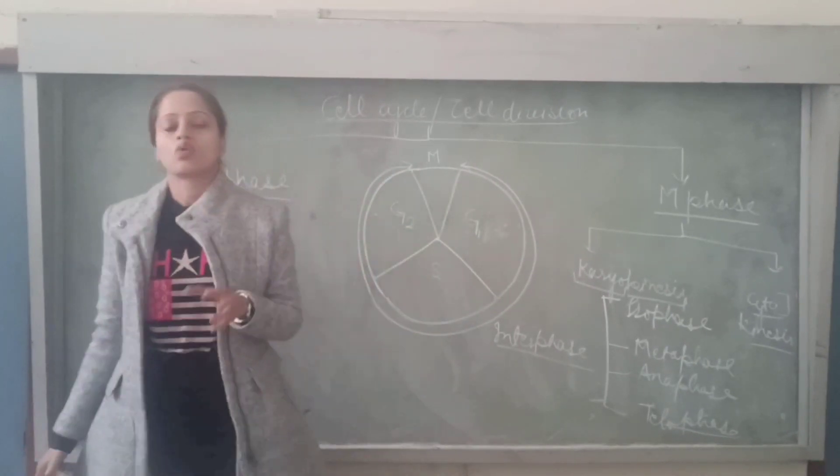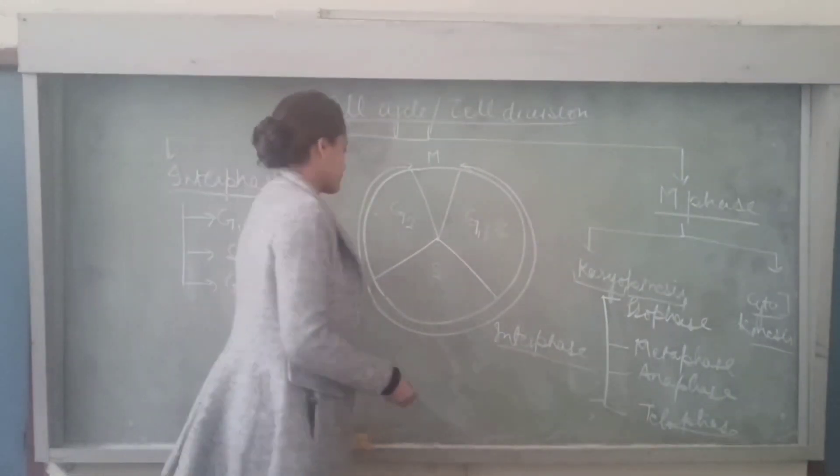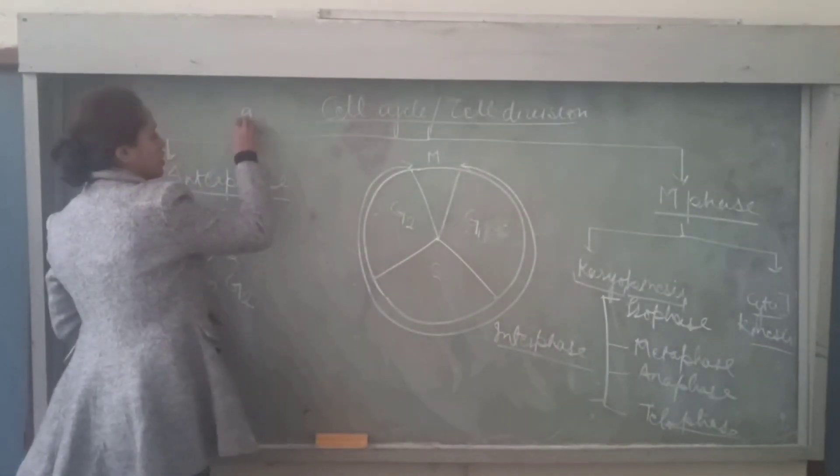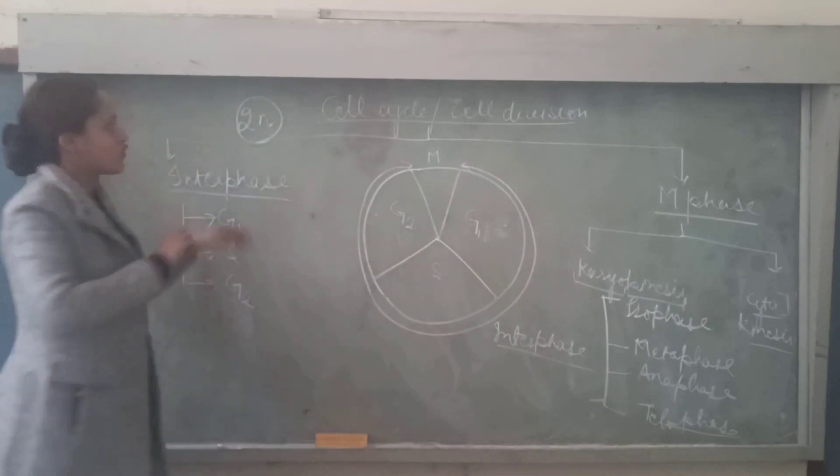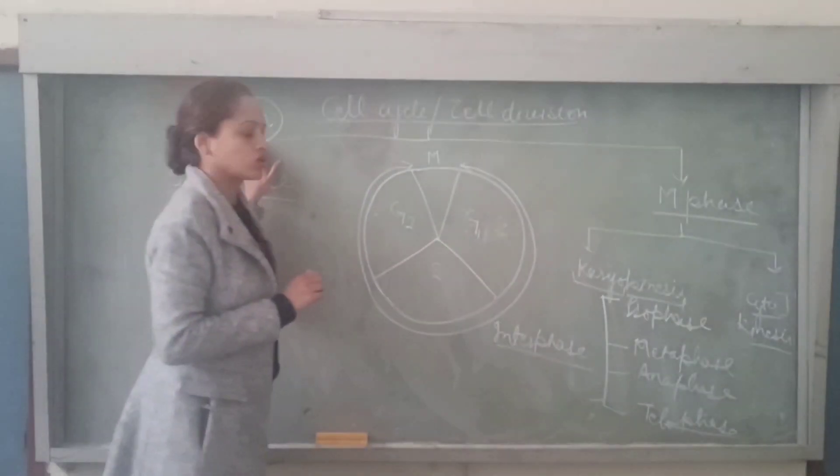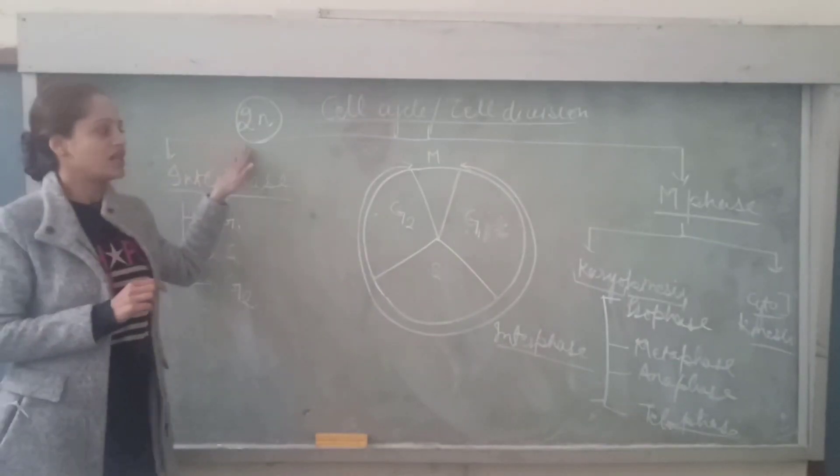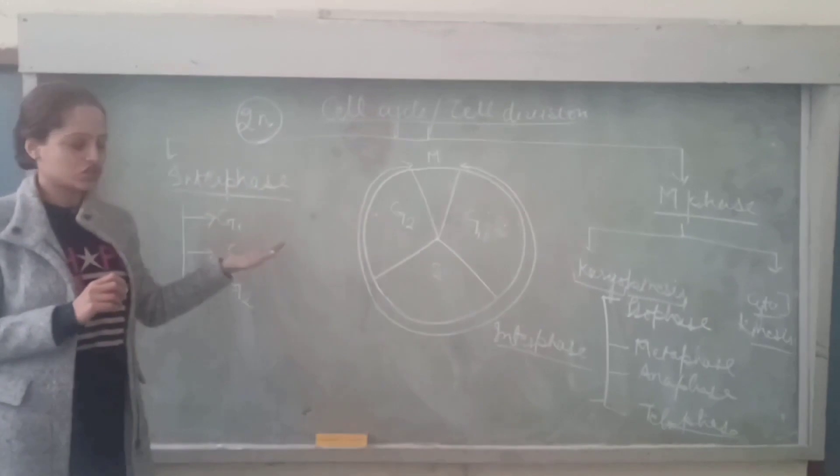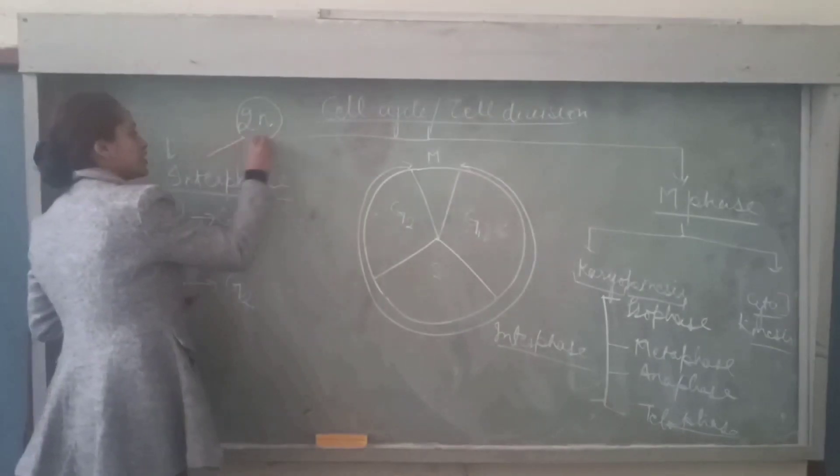So first of all, what is the need of this preparation? Suppose we have a diploid cell. It is now supposed to undergo cell division. If this cell undergoes cell division before any preparation, after division,